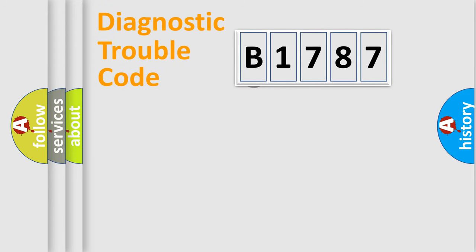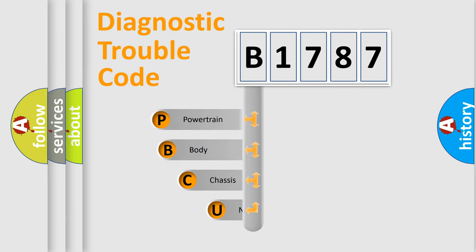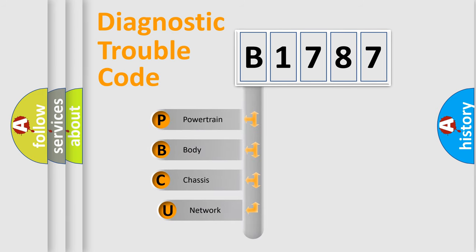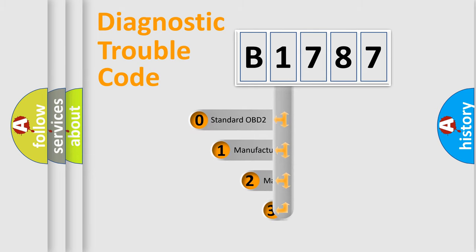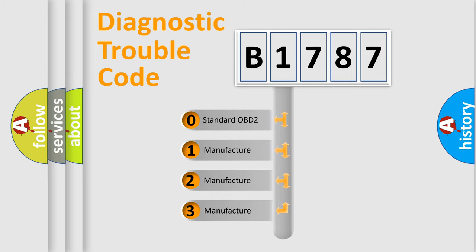Let's look at the history of diagnostic fault code composition according to the OBD2 protocol, which is unified for all automakers since 2000. We divide the electric system of an automobile into four basic units: Powertrain, Body, Chassis, and Network. This distribution is defined in the first character of the code.